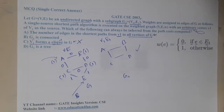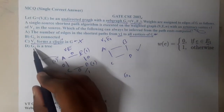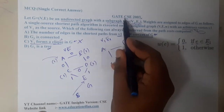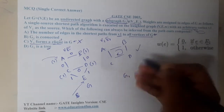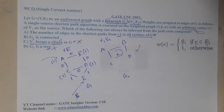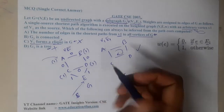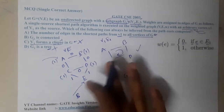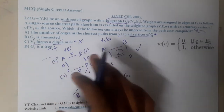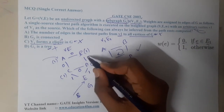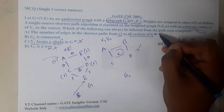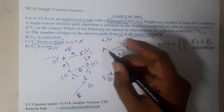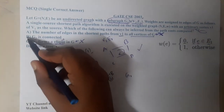Moving on to option D: G1 is a tree. This statement is absolutely wrong because G1 is a subgraph and it might have a loop — in our example we drew a loop. So option D is also wrong. For option A: the number of edges in the shortest path — this is wrong because some edges have weight 0. Between e and b there are two edges but the path length is 1, so you cannot determine the number of edges from the path cost alone.